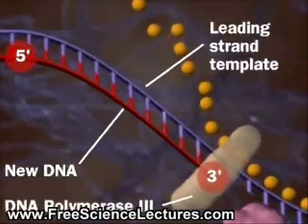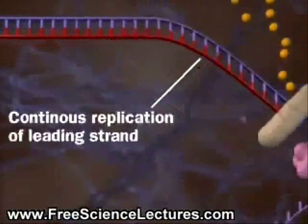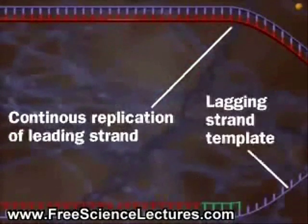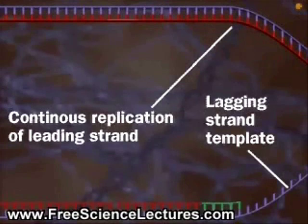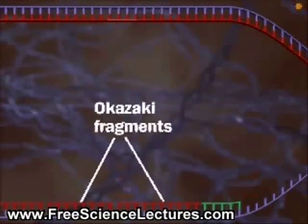The leading strand forms from a 5' to 3' direction using DNA primers. But the lagging strand presents a problem — it forms from a 3' to 5' direction, by pieces called Okazaki fragments.